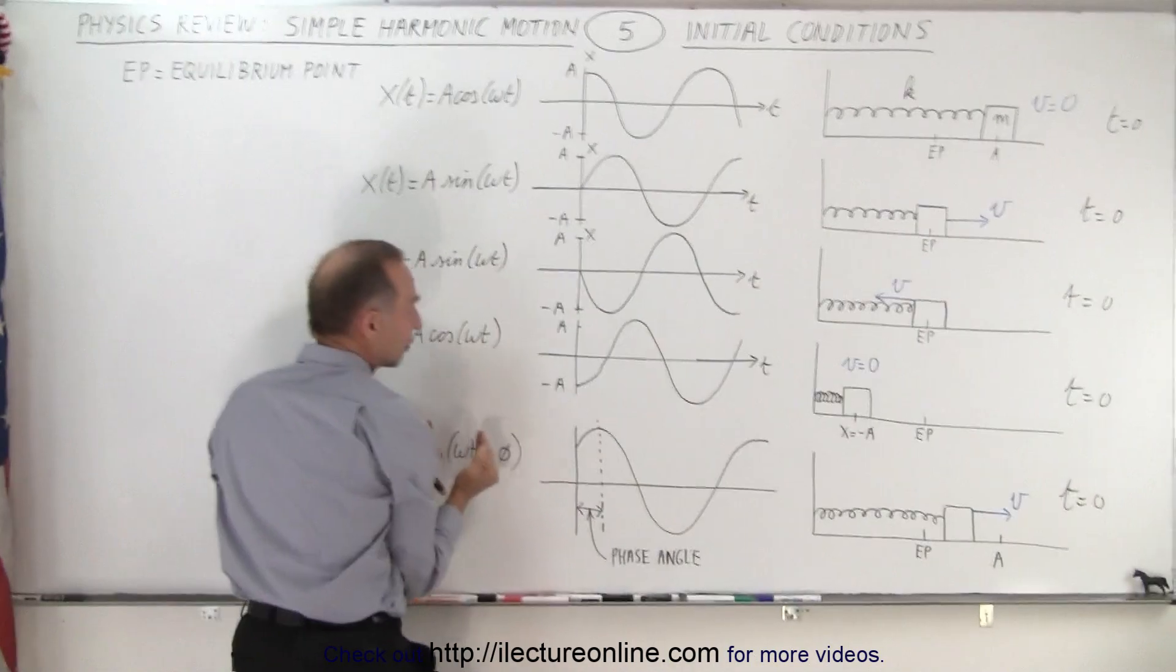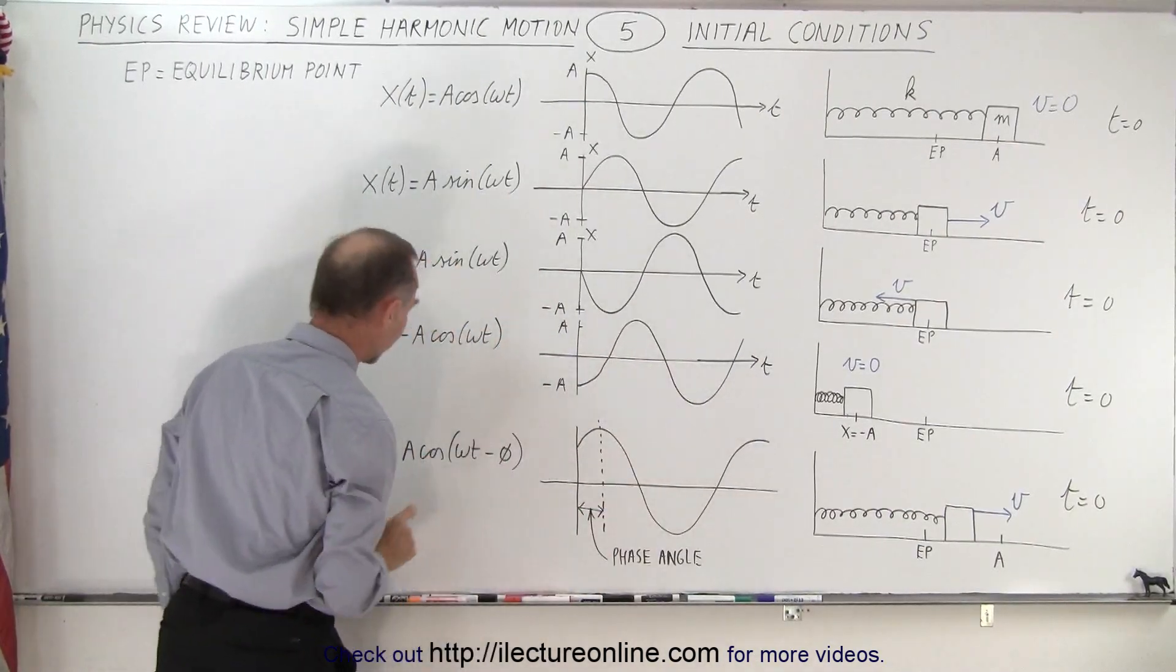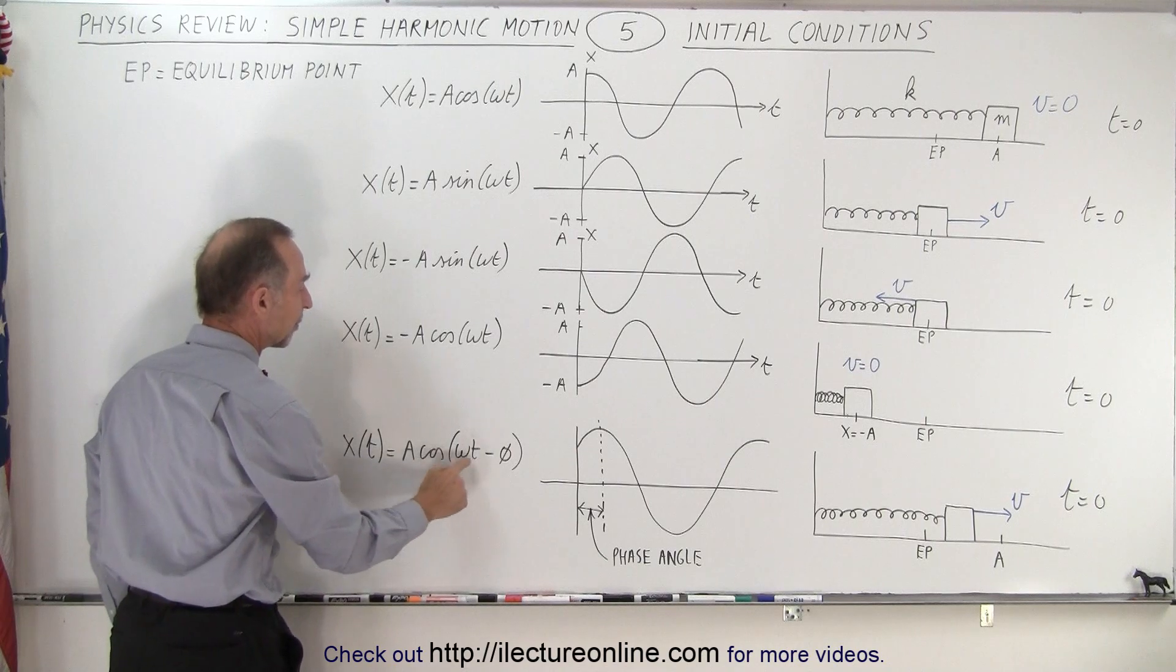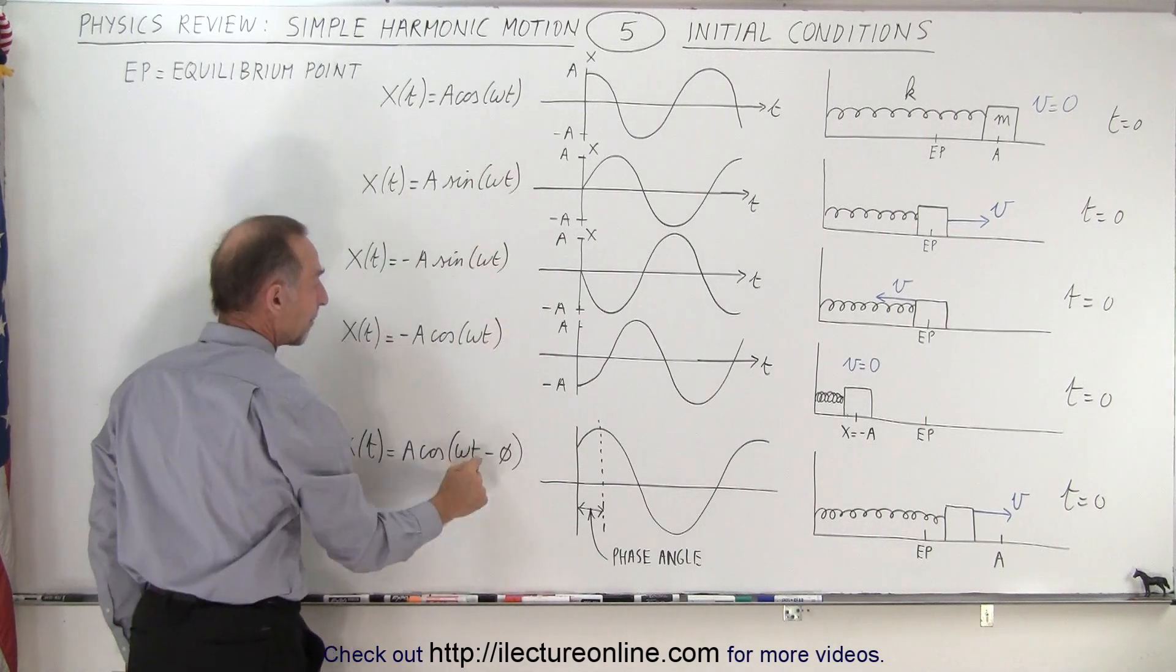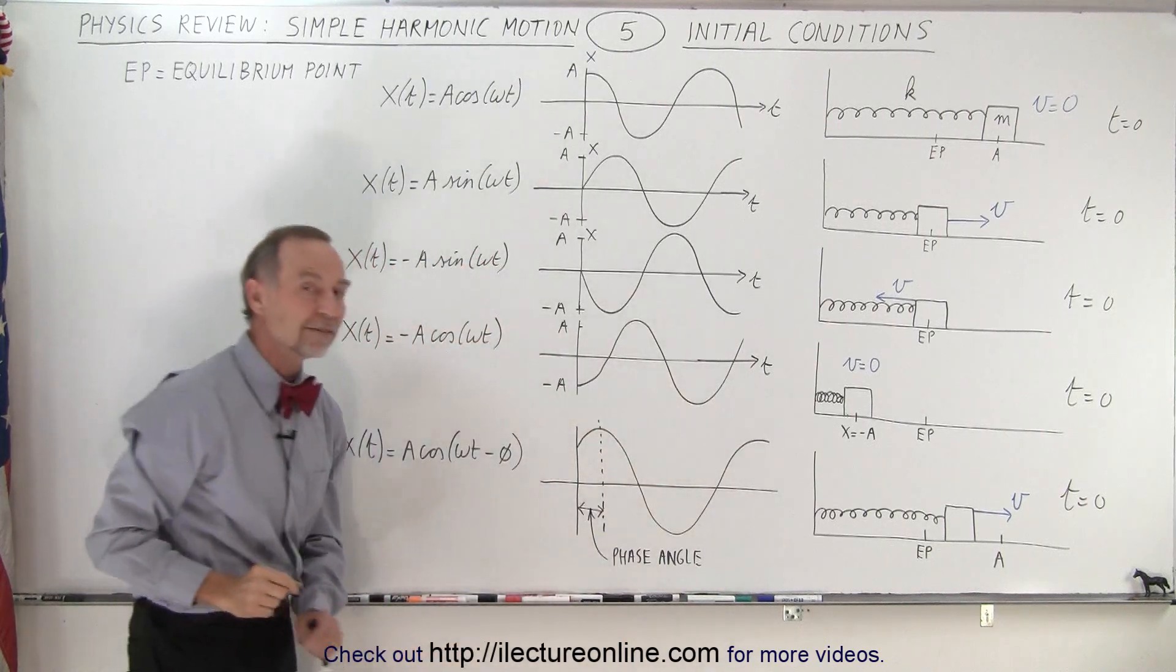So you take the cosine function and shift it to the right by the phase angle. Therefore the equation becomes A cosine of omega t minus the phase angle, because it's moved to the right by the phase angle.